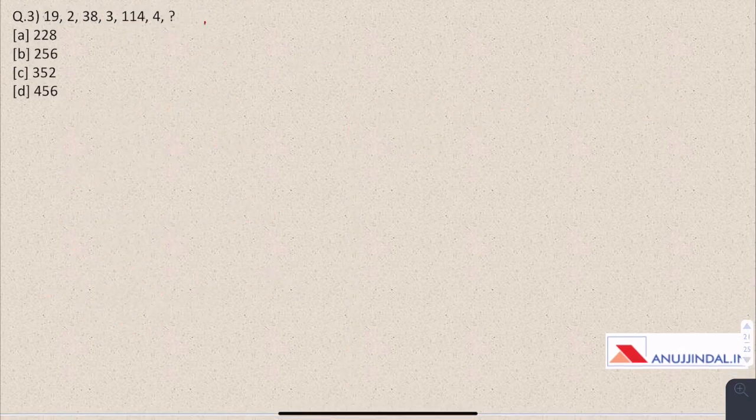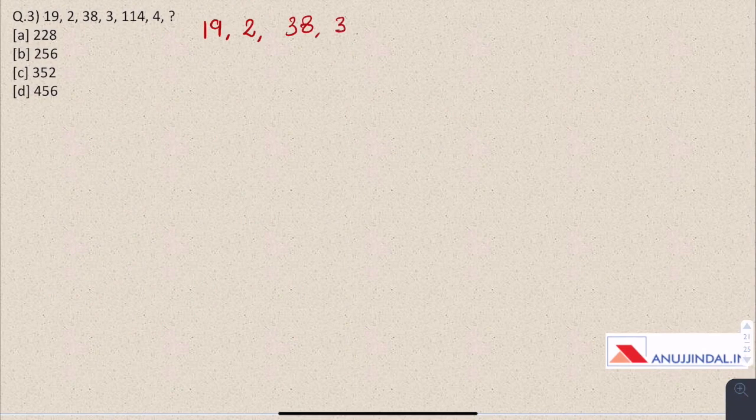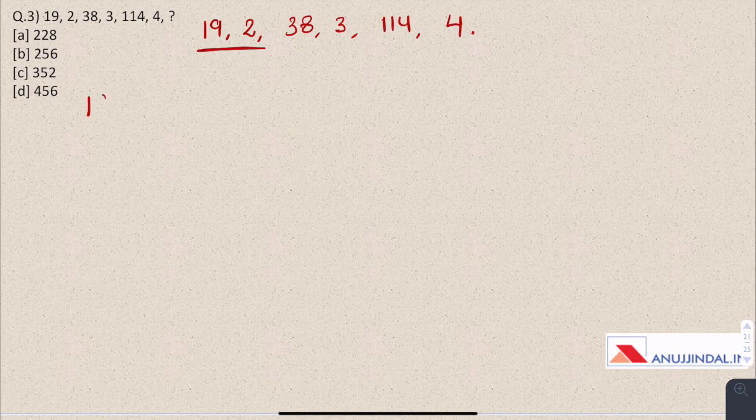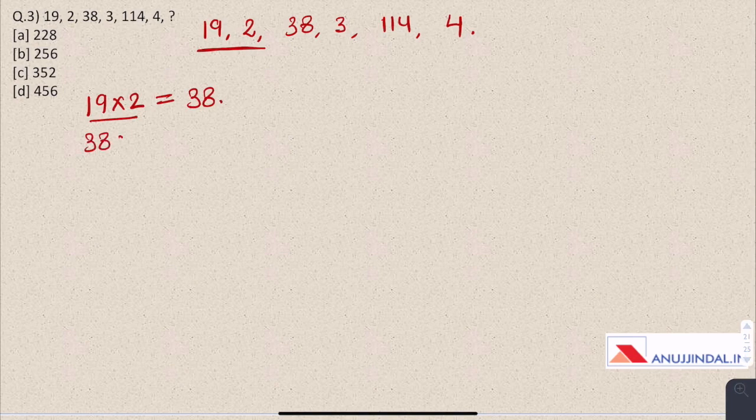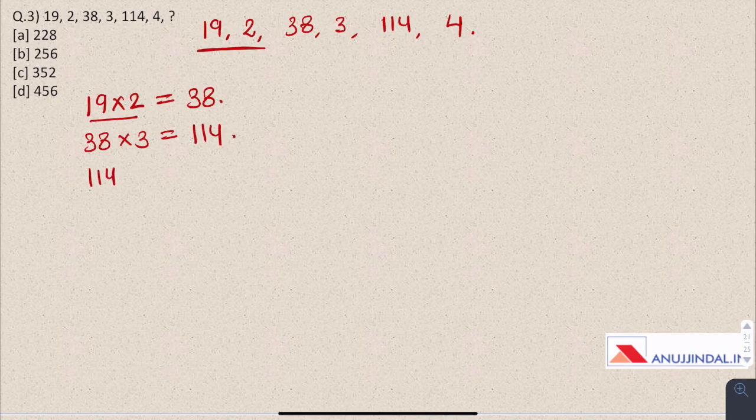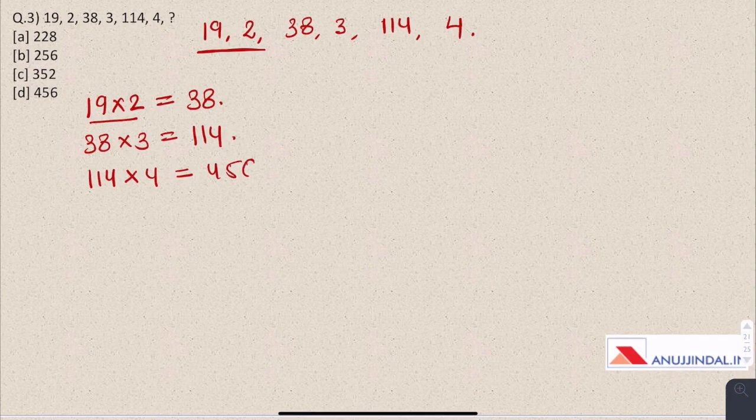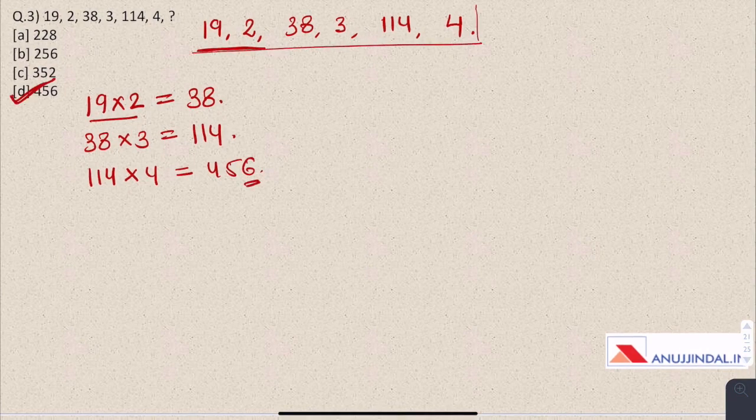Question 3. So the given series is 19, 2, 38, 3, 114, and 4. So we can simply see that the first number into second number, which is 19 into 2, is 38. Then third number multiplied by fourth number is fifth number, and similarly 114 multiplied by 4, which is the sixth number, would be the seventh number, 456. This is a very easy question.